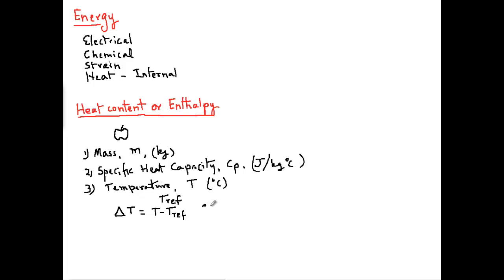With these three terms, we will write a rather simple equation to describe enthalpy or heat content. We will use the symbol uppercase Q for enthalpy. So our equation is Q equals m times specific heat Cp times delta T. Now if we write the units of these three terms, we get kilograms times joules per kilogram degree C and degree C.